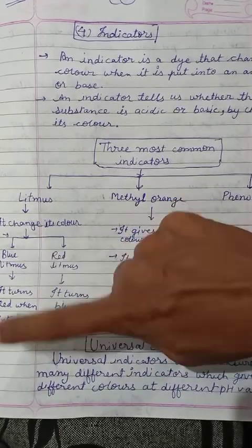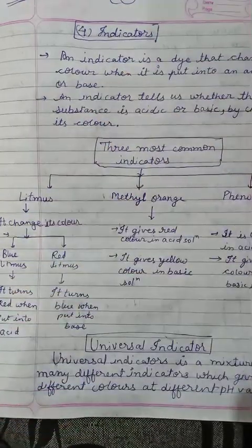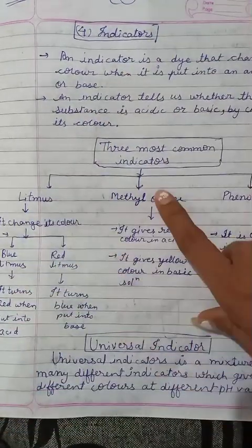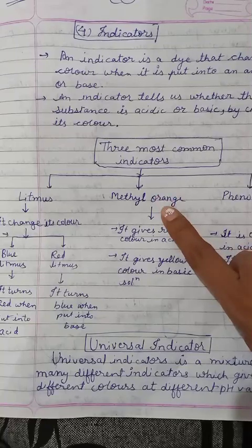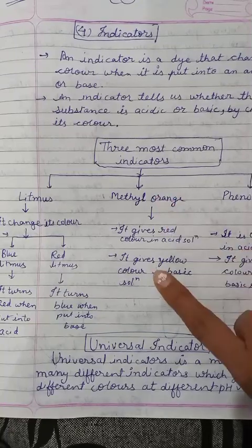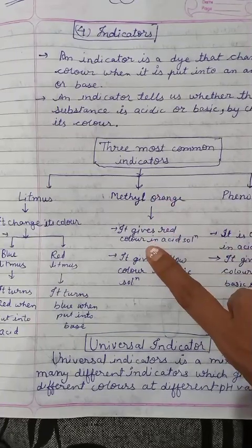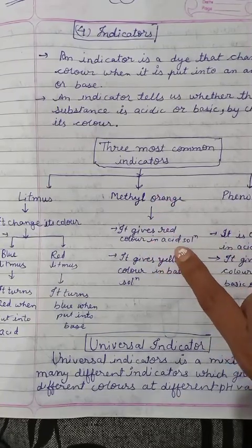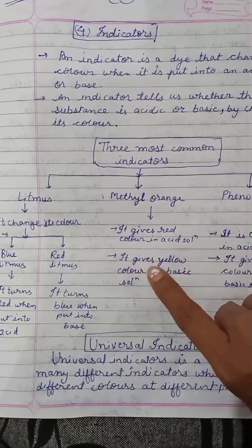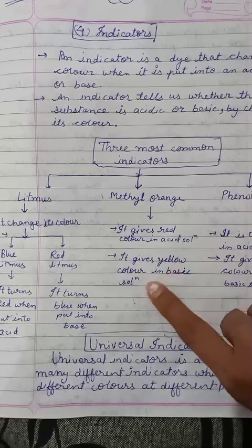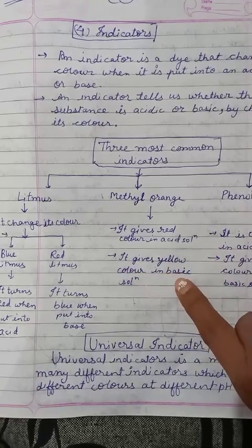When we add acid to blue litmus, it will become red. The second indicator is methyl orange. It gives red color in acidic solution and yellow color in basic solution.